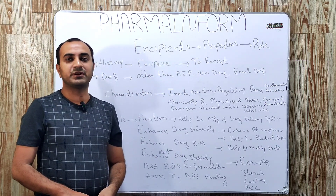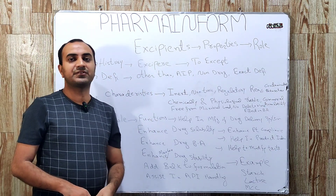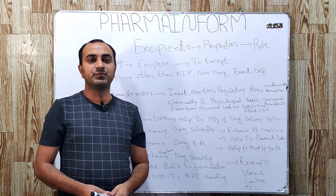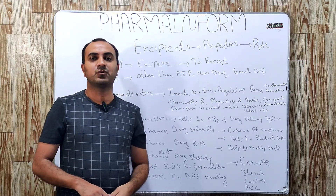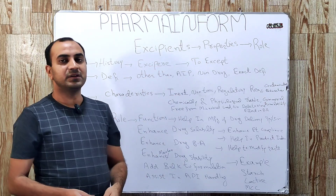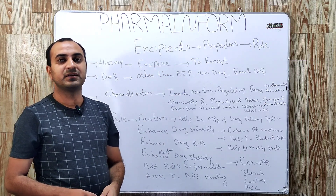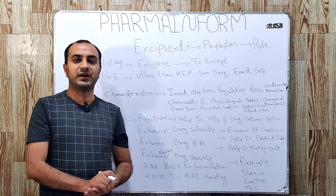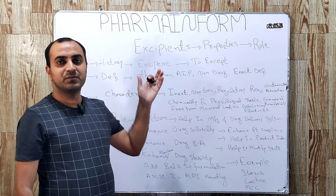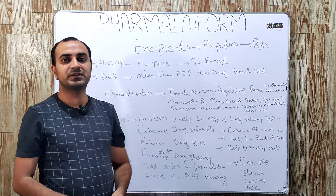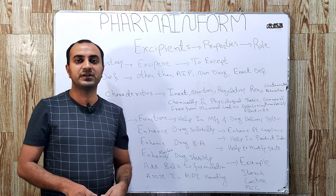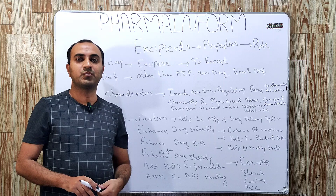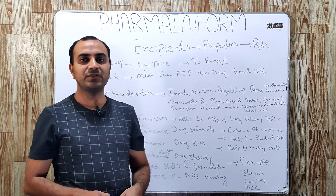What is an excipient? First, its history. The word excipient is derived from a Latin word meaning 'to accept' — in other words, 'other than.' In short, excipients can be defined as ingredients or materials other than the API, or active pharmaceutical ingredient, that make up a dosage form.